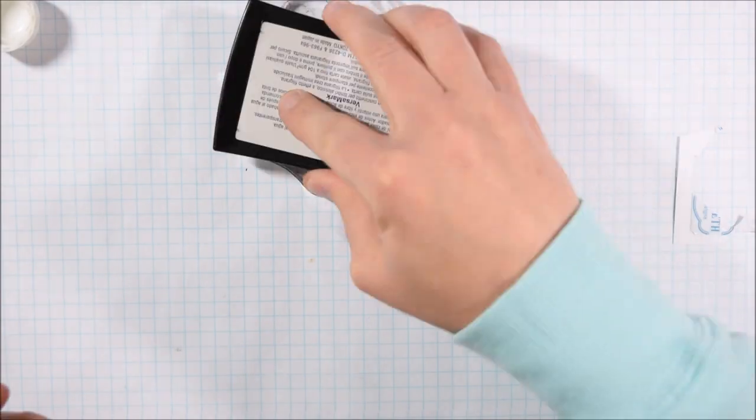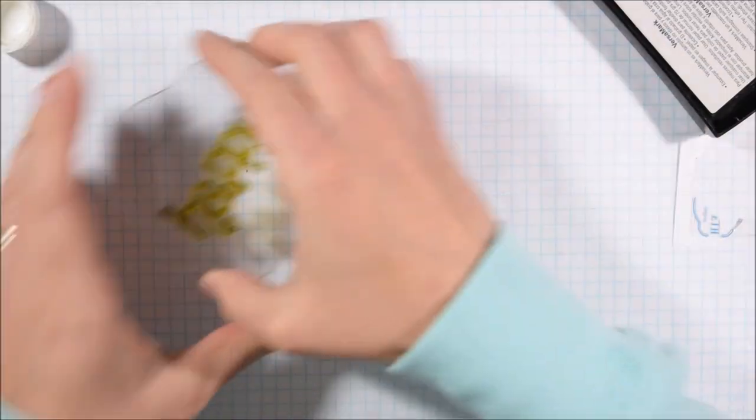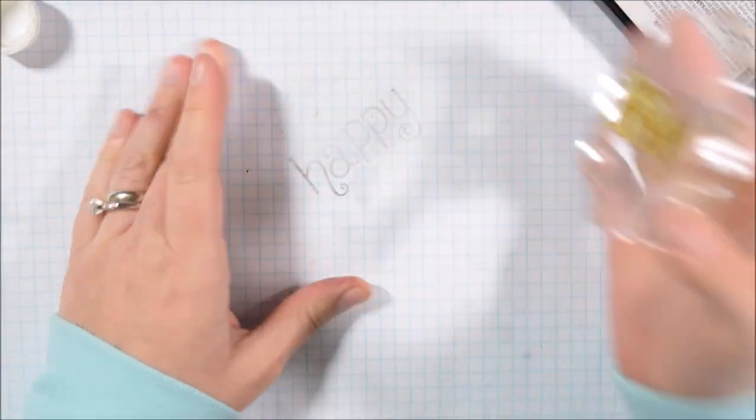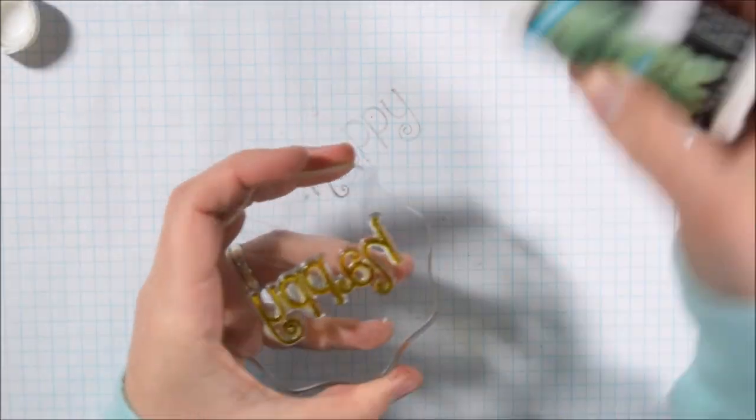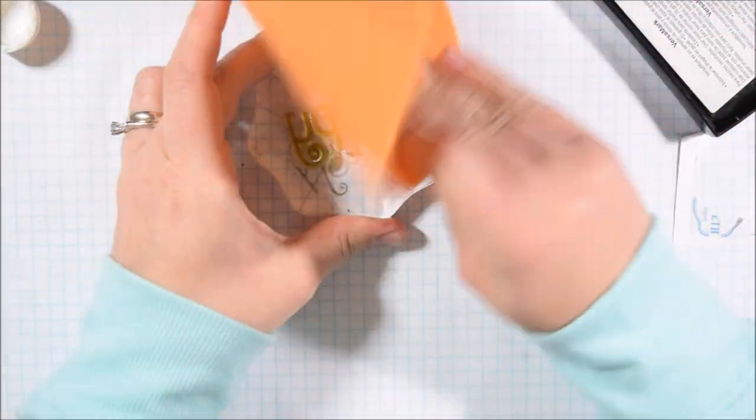Especially over white, you'll notice the dirty parts. As you can see here I'm stamping in Versamark which is a clear ink, but you're definitely seeing the word happy. It's not such a big deal because I'm actually going to be stamping and covering it with white embossing powder. So much of that would be covered.